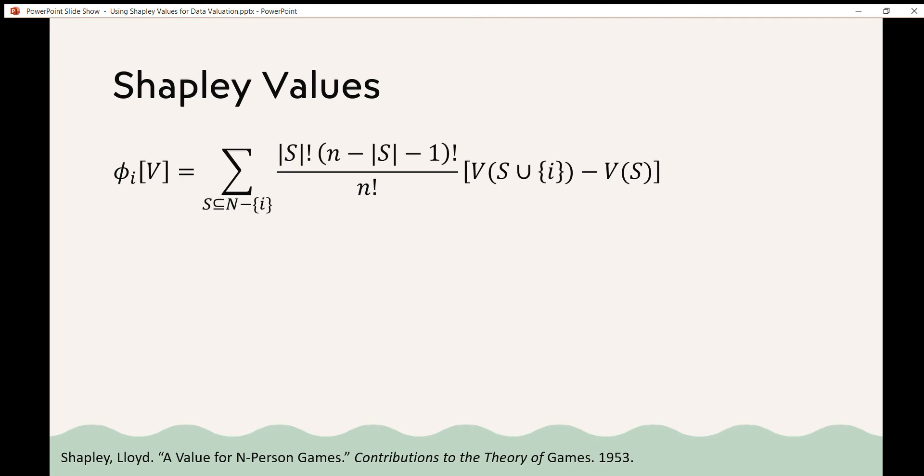So Lloyd Shapley defined the Shapley value phi i of the game v to be the sum over all subsets s in n minus i of the size of s factorial times n minus the size of s minus 1 factorial over n factorial times the value of s union i minus the value of s. That first term with the factorials can be written as a combination. It is exactly equal to 1 over n times 1 over n minus 1 choose the size of s.